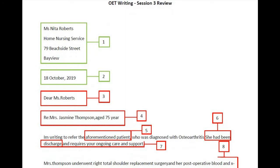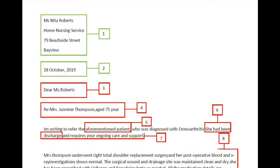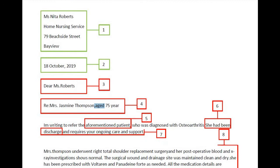Now let us see how we can write the letter with the help of a sample letter written by a candidate from India. When we look into the details of the letter, starting from the address, we can see the address and the date are drafted correctly. In the salutation, 'Dear Miss Roberts,' a comma is missing. There is a minor mistake in the reference as well — the writer has not written the age in a proper way. Instead of 'age 75 year,' it should be written as 'Re: Mrs. Jasmine Thompson, 75 years.'